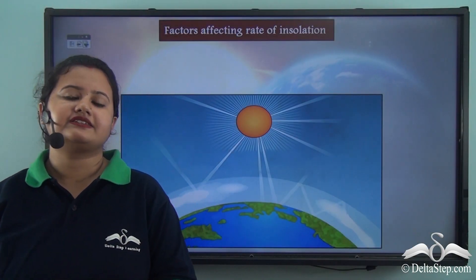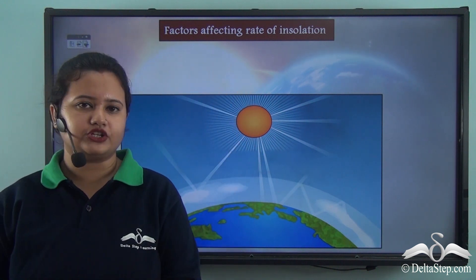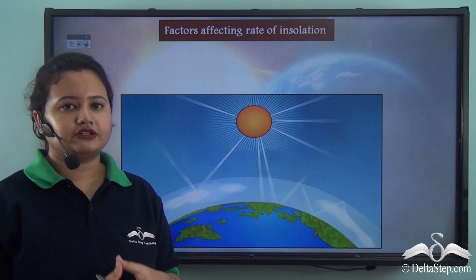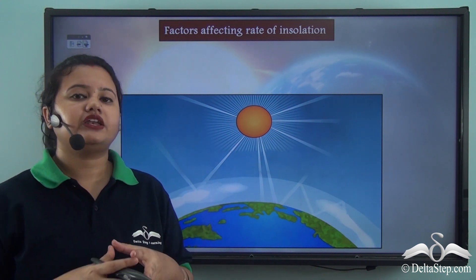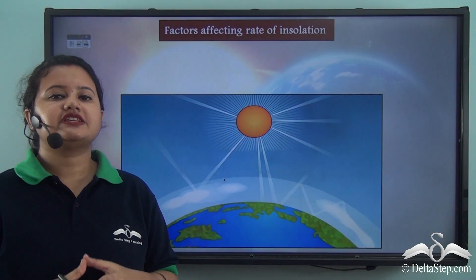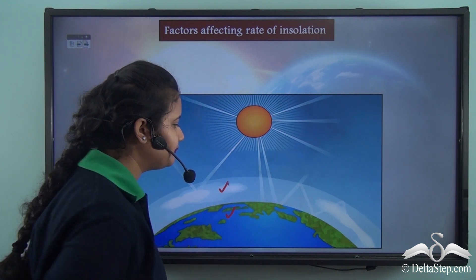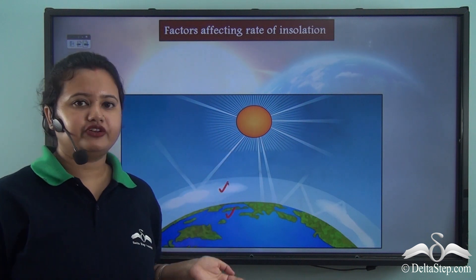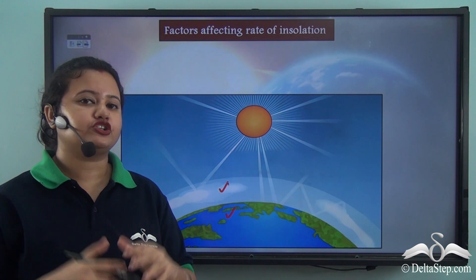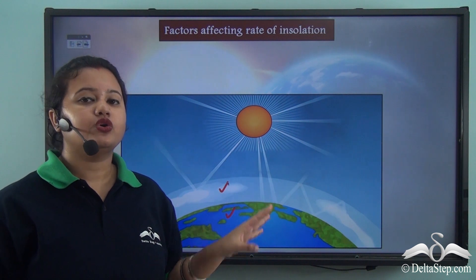Now let us discuss another factor that affects the rate of insolation. The earth's surface and the earth's atmosphere are heated unequally on receiving the sun's rays. Due to this unequal heating of the earth's surface and the earth's atmosphere, there exist temperature differences between them. As a result, there is circulation of air and water molecules within the atmosphere and in the ocean bodies.